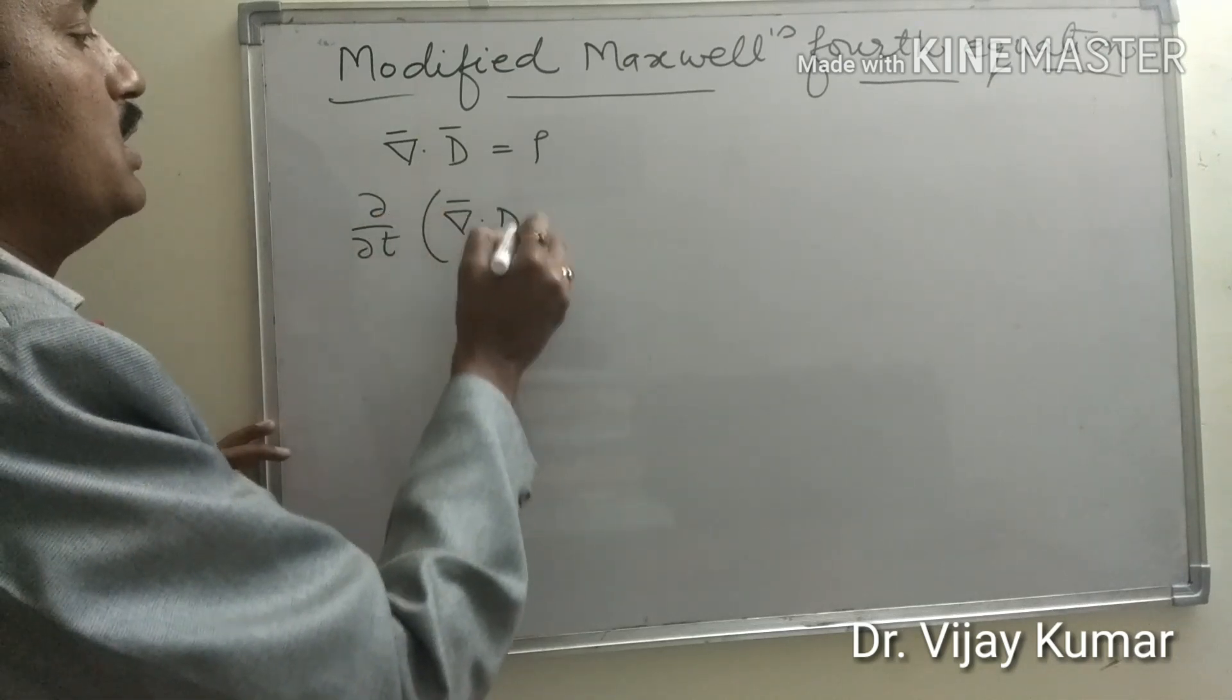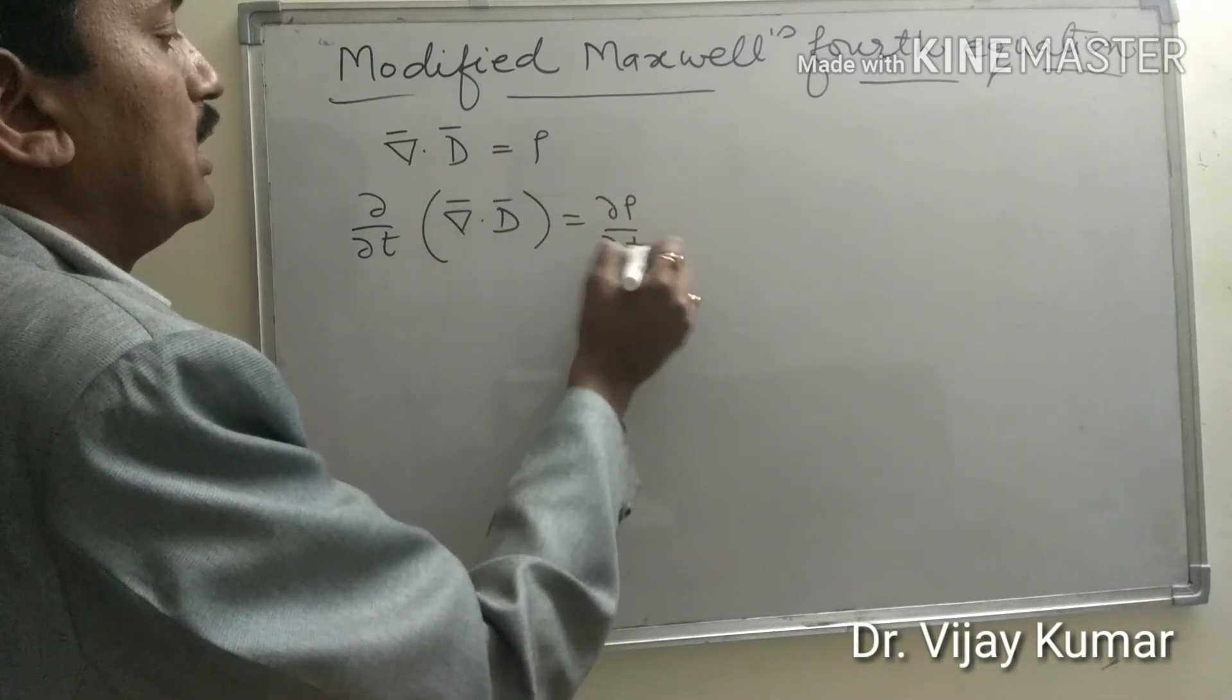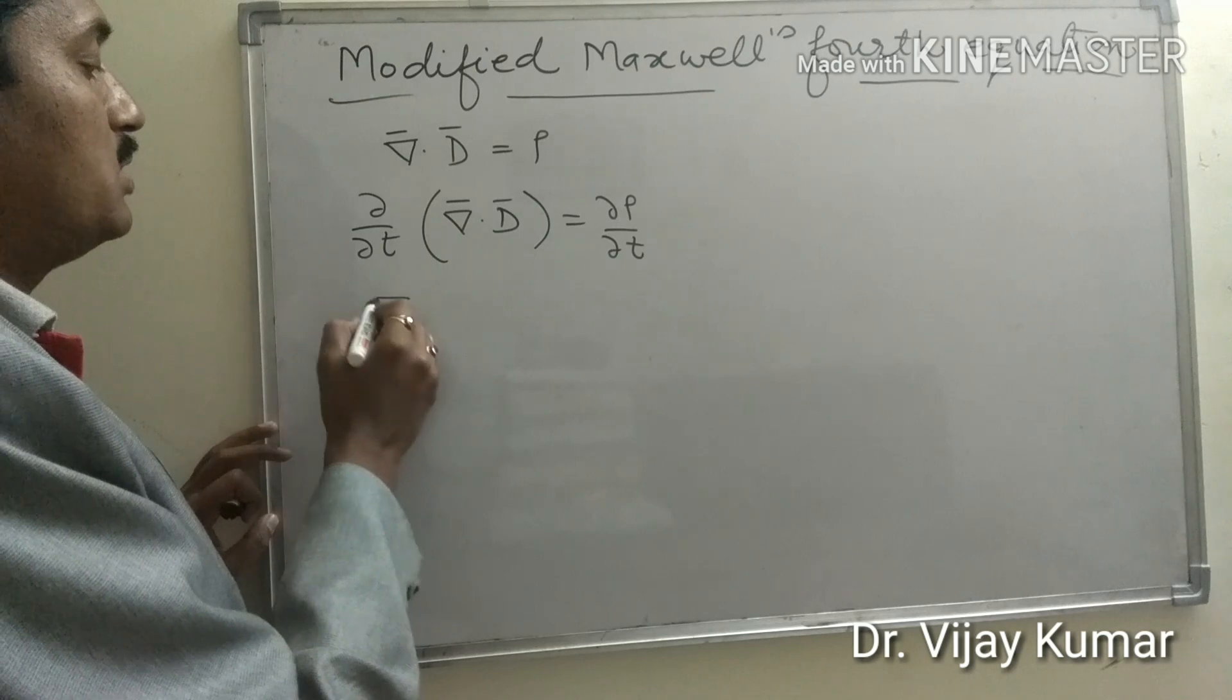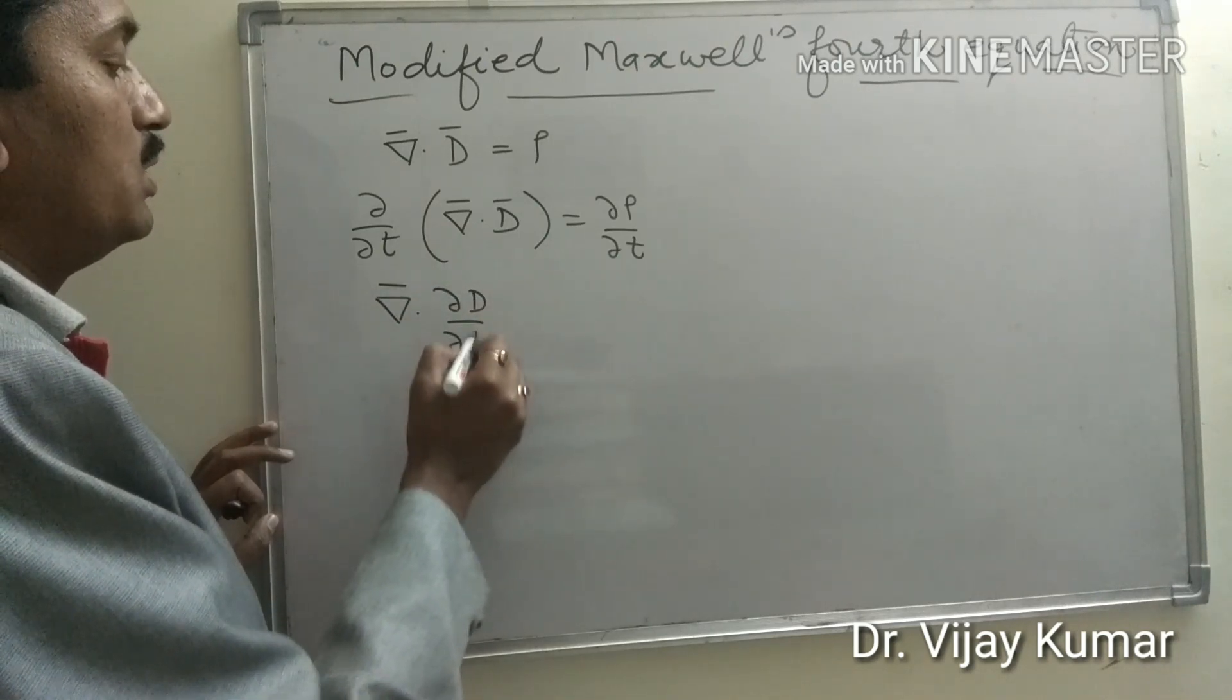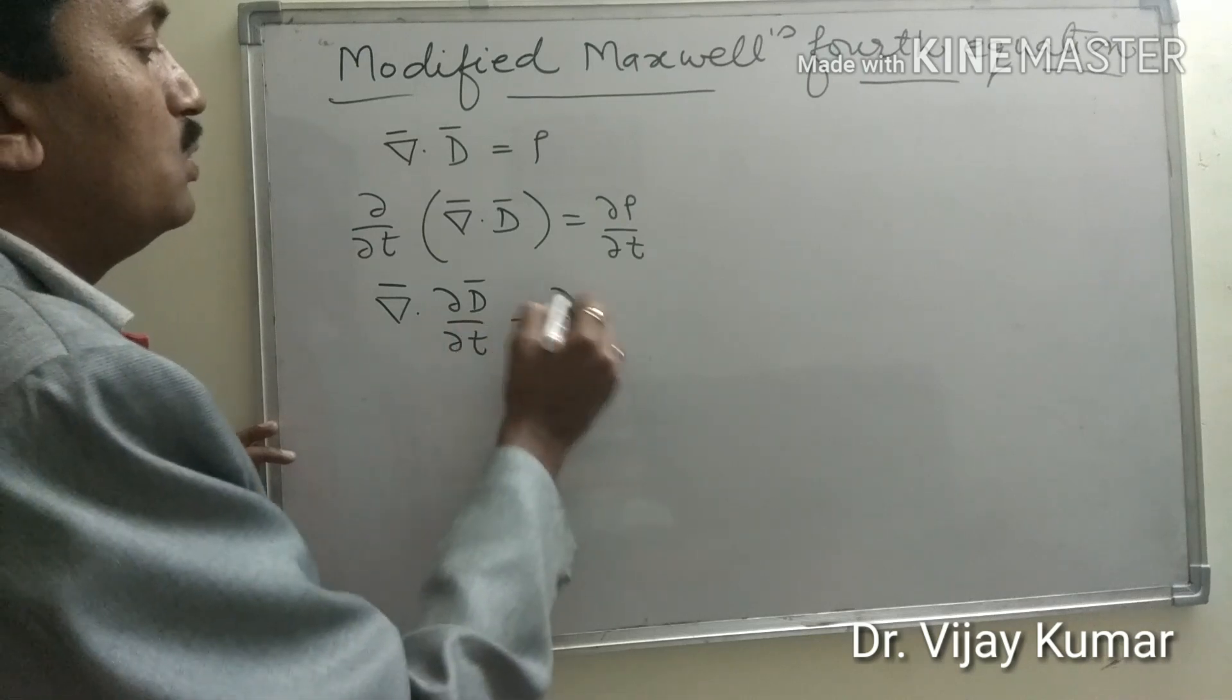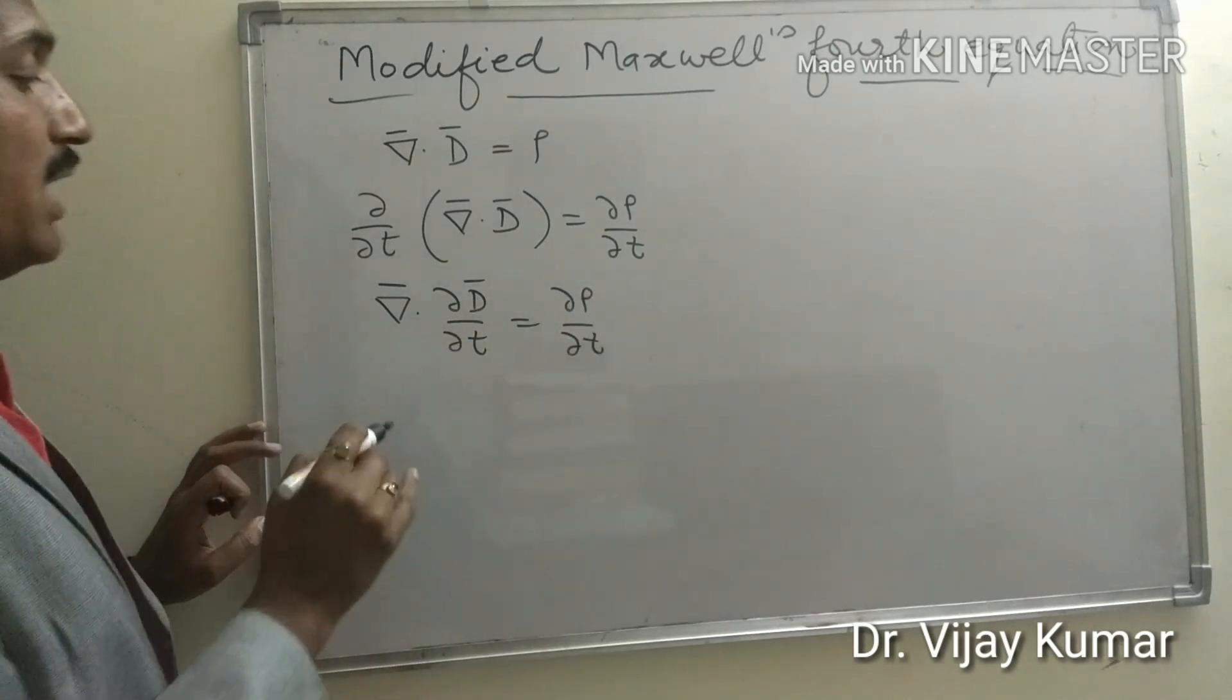Del dot D equal to del rho upon del t. And it becomes del dot del D over del t equal to del rho upon del t. Add divergence of